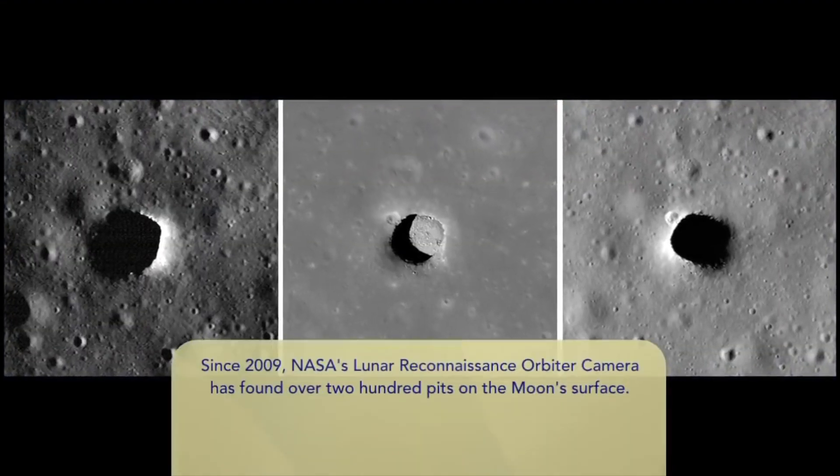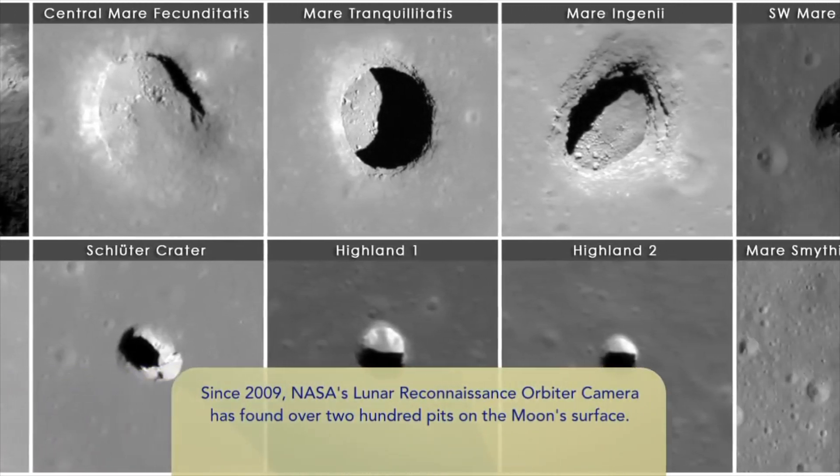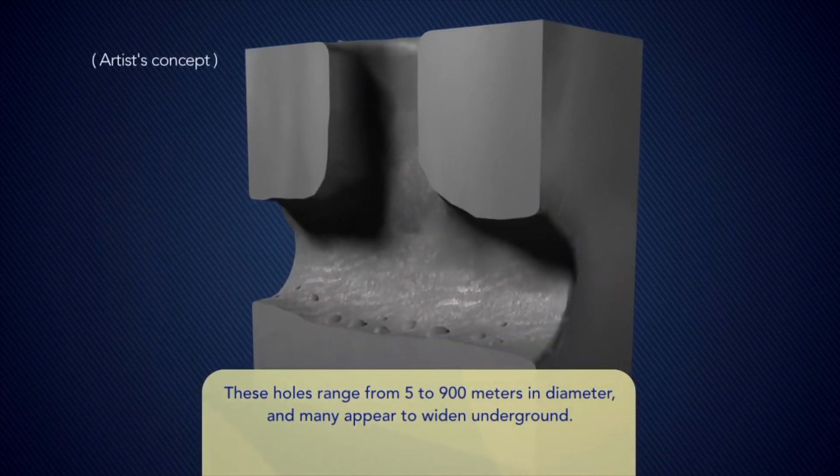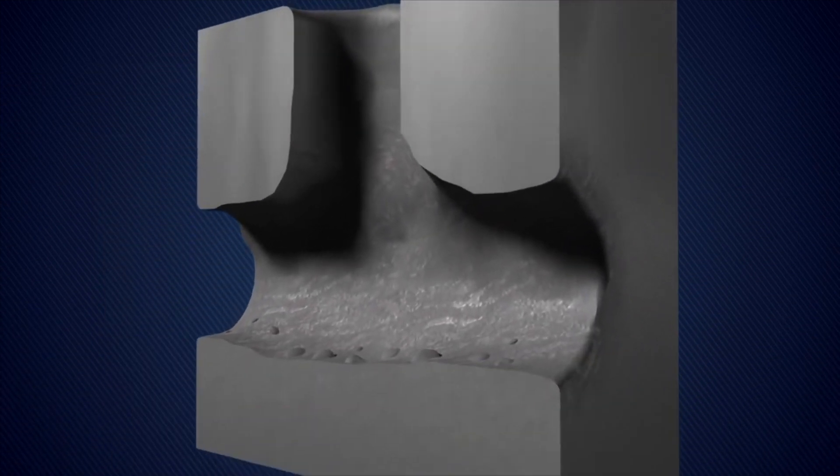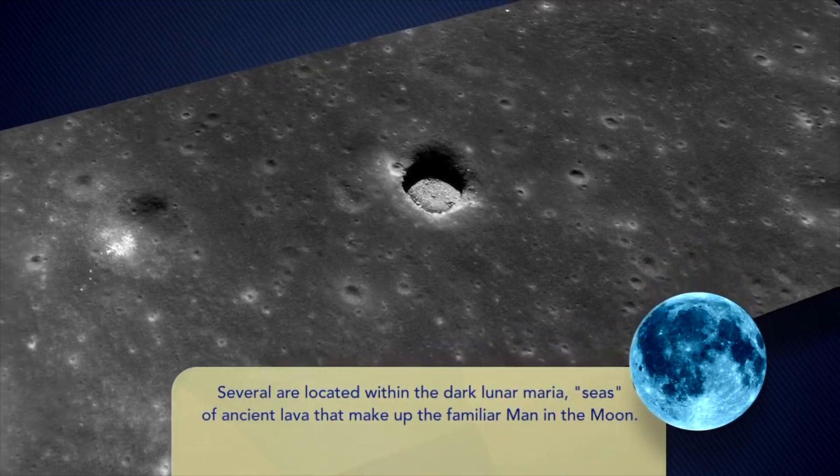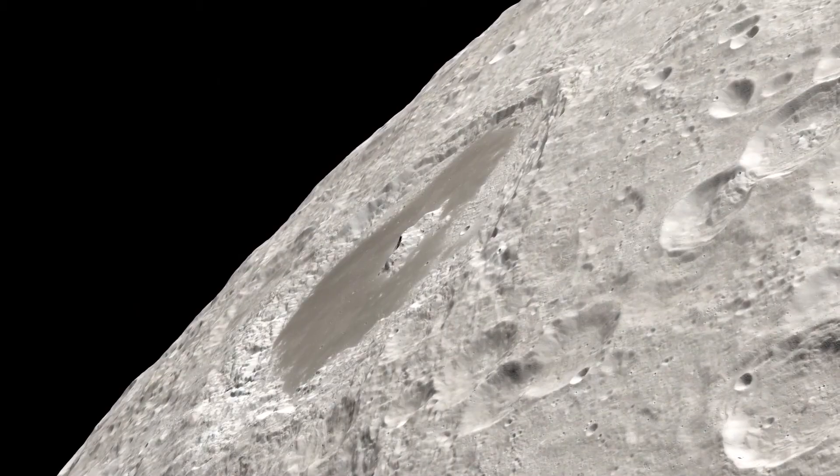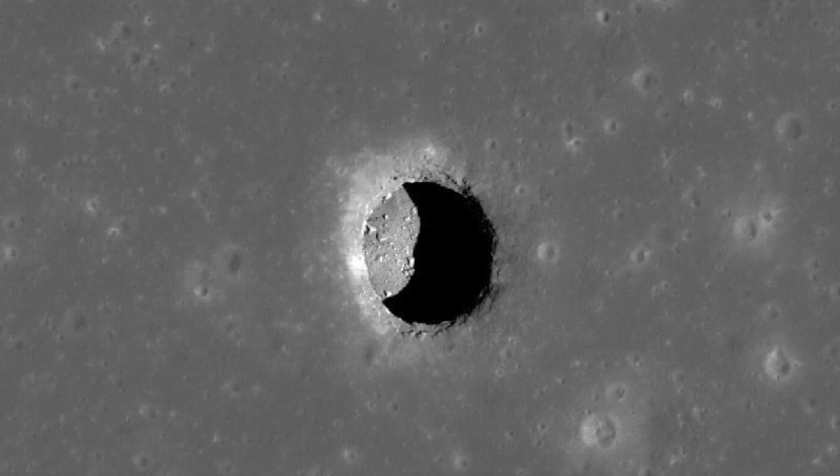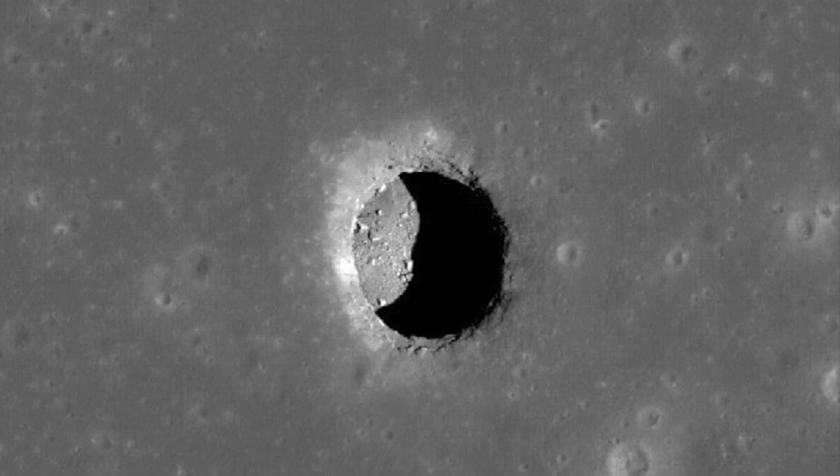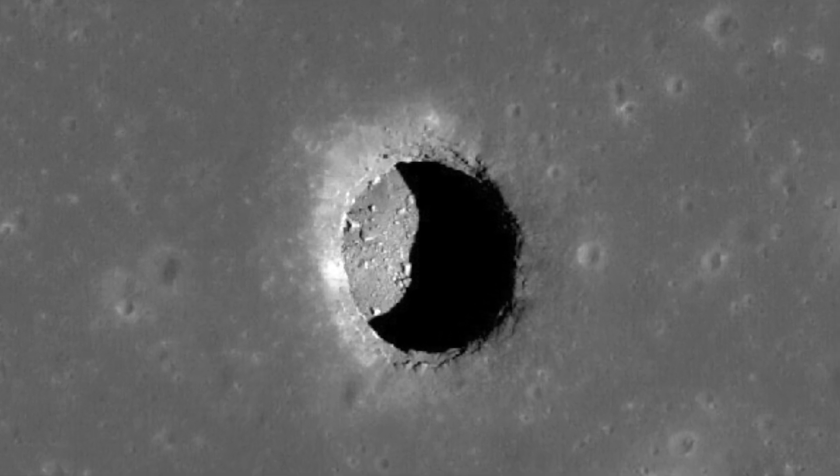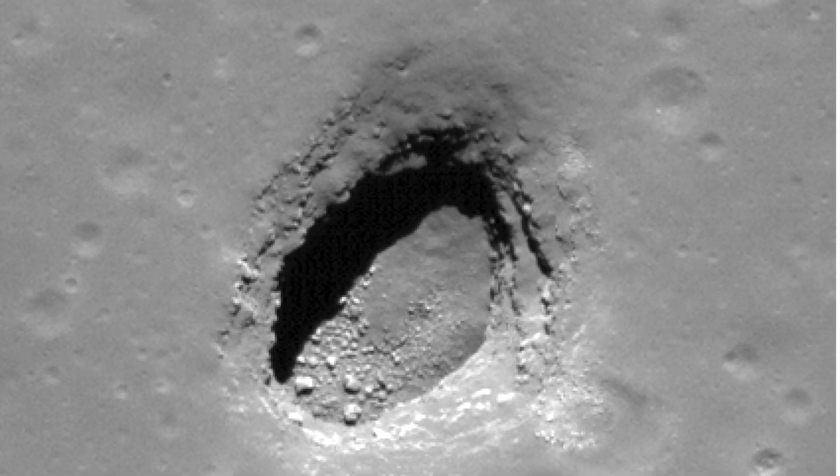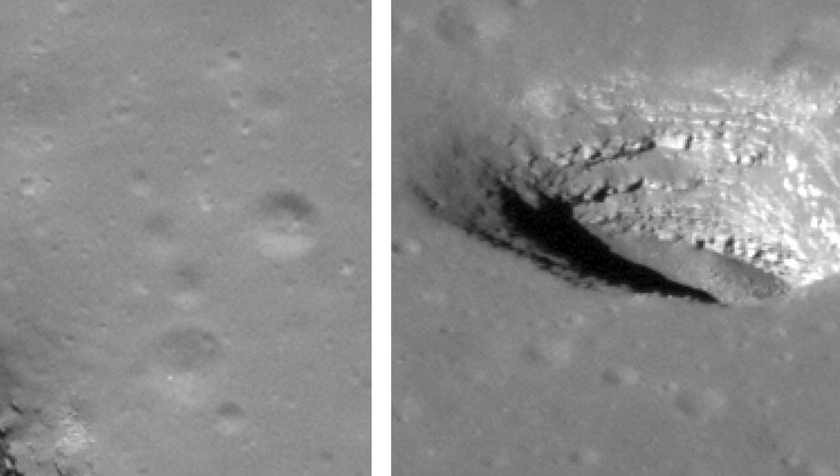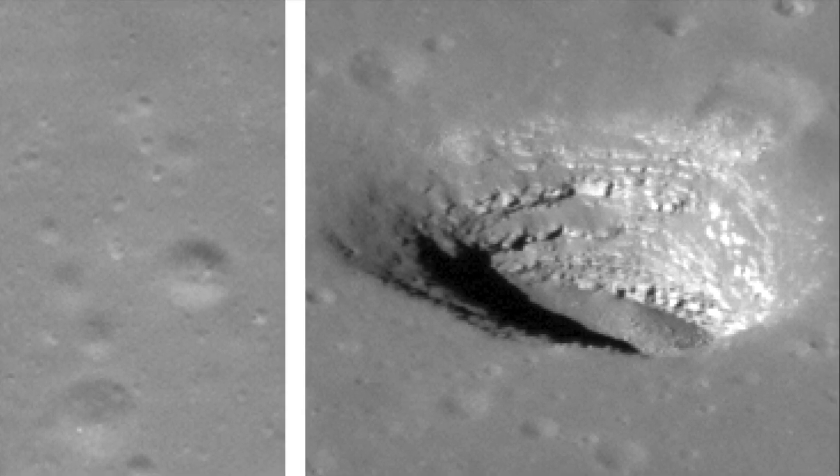In 2009, Japan's Kaguya spacecraft captured images of what could be a skylight. These pits are hard to find because when seen from an orbiting spacecraft, they look very similar to craters. But unlike craters that have sloping inner walls, these pits have vertical walls and a flat floor. A meteoroid could produce a crater, but a hole like this could only be produced naturally by something collapsing underneath. This suggests the presence of some underground cavity.